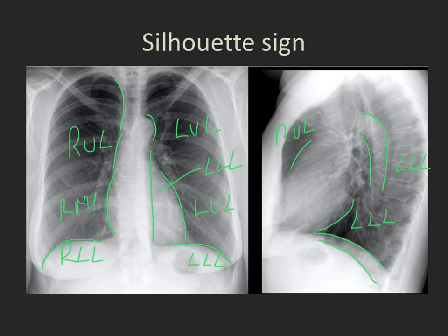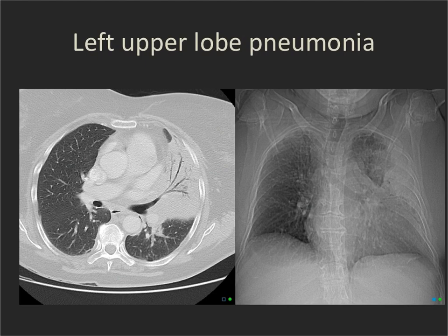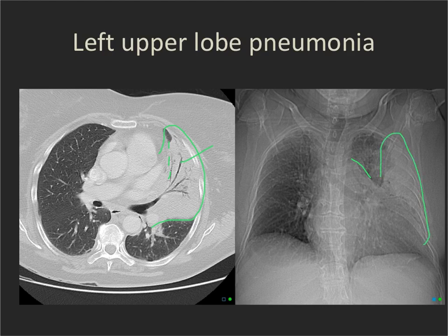Seeing which silhouette you've lost tells you what lobe the pathology is in. Here's a patient with dense consolidation due to pneumonia involving the left upper lobe. On the CT scan, there is a large area of consolidation with air bronchograms in the left upper lobe, and no air between the left heart border and that consolidation — so we've lost the silhouette. On the corresponding view, you can see the area of opacity and the loss of the normal left heart border silhouette. Notice, however, that the left hemidiaphragm is still visible because the left lower lobe, which abuts it, is not involved.